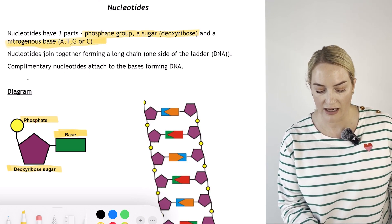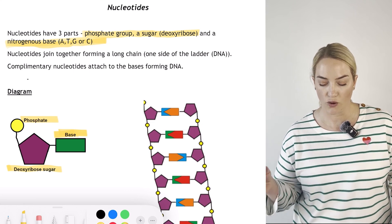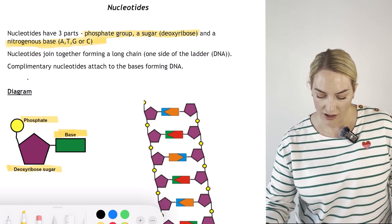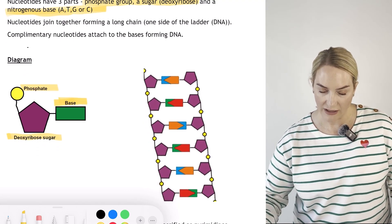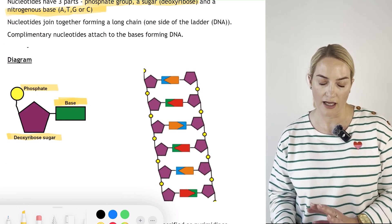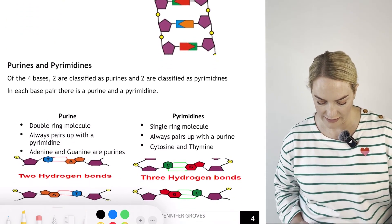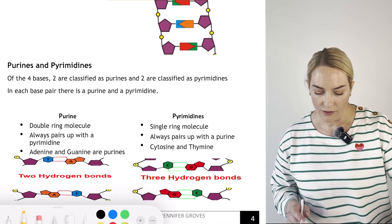Nucleotides are joined together forming a long chain on one side of the ladder. The complementary base pair forms on the other side of the ladder, and they then twist up together to form the double helix.